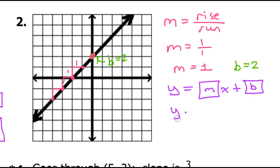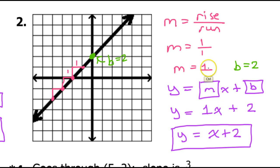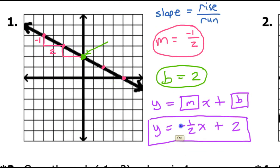I'm just going to substitute these values in — that would be 1x plus 2. You should never leave a 1 in front; 1 times x is just x. So the final answer is going to be y equals x plus 2. Please do not write the 1 in front of it; it's not considered completely simplified. Notice that this slope is positive 1, and the line is going uphill from left to right. Always double check when you're finished: if it's uphill, you should have a positive slope; if it's downhill, you should have a negative slope.